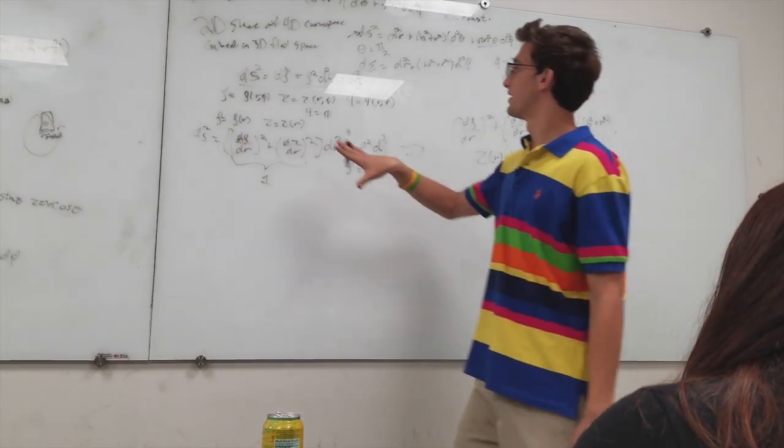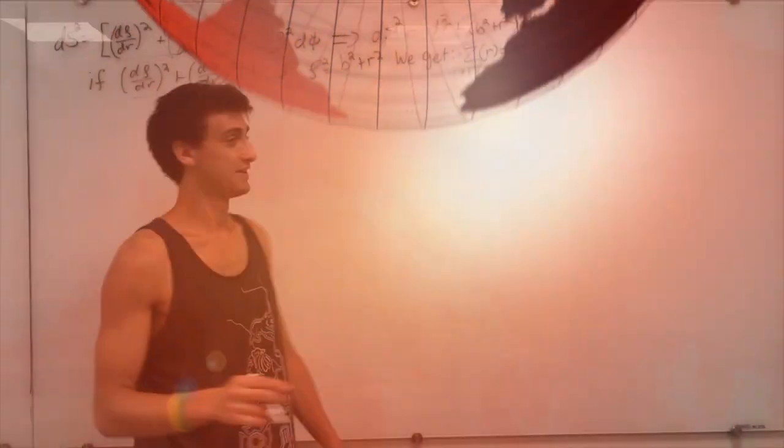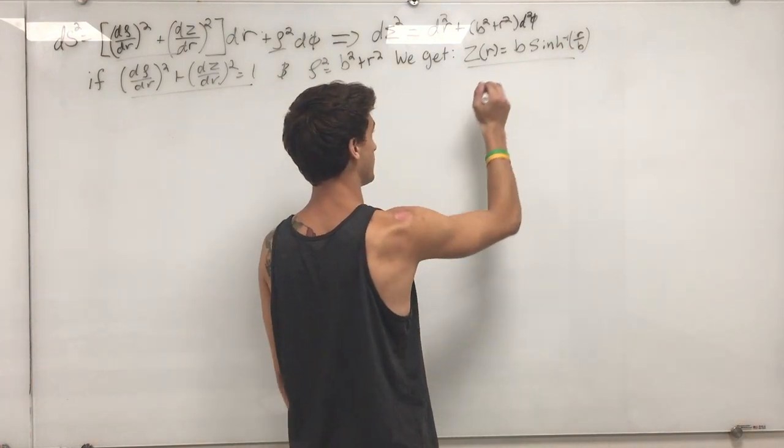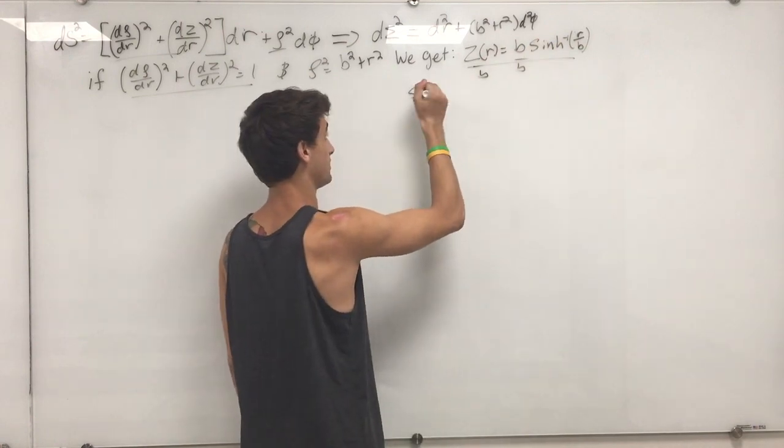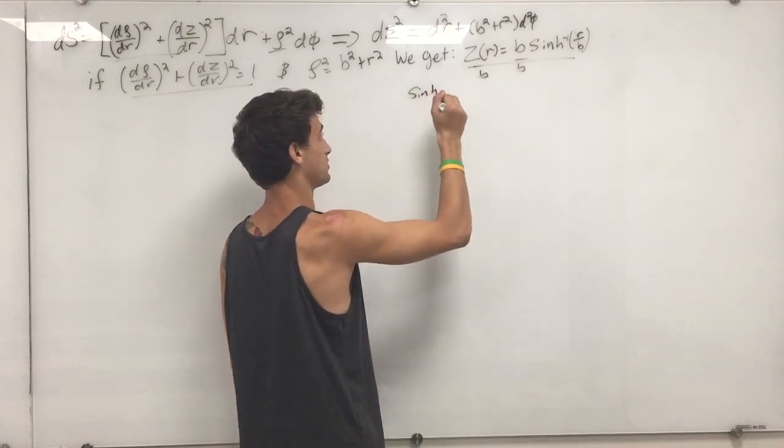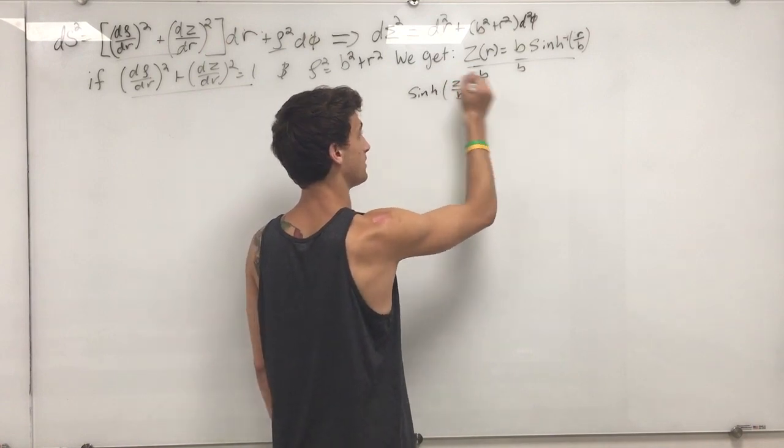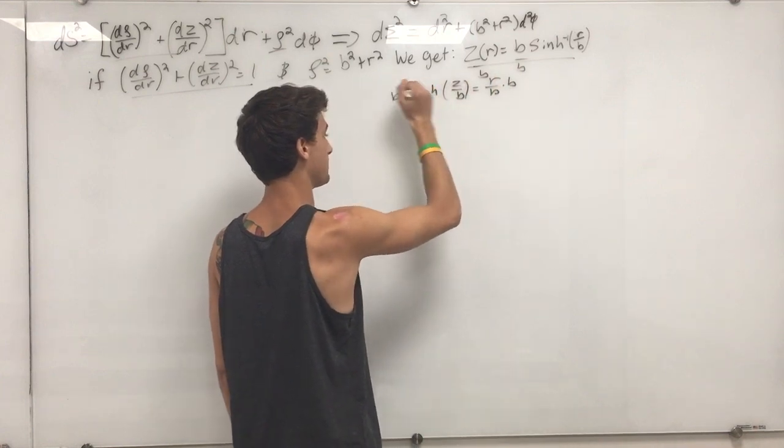So, we get z over r. So, what we end up getting is we get b arc sinh r over b. Now, we want to write it in these coordinates completely, rho, z, and phi. So, we want to get rid of r. So, the first thing we do is we want to write this in terms of r. So, we divide b by both sides. Take the arc sinh.